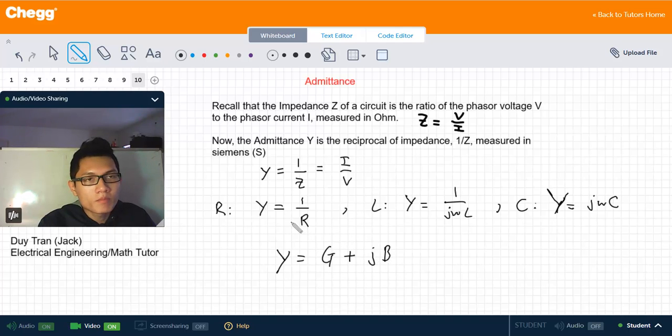Just know that the admittance can be represented as G plus the complex j of the B.